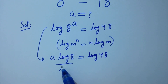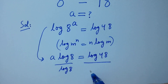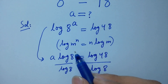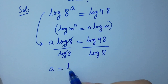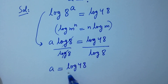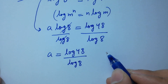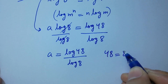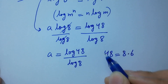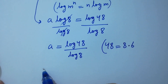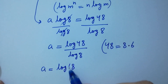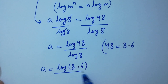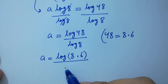Divide by log 8 on both sides. Log 8 and log 8 cancel, giving a equals log 48 over log 8. Since 48 equals 8 times 6, a equals log(8 times 6) over log 8.